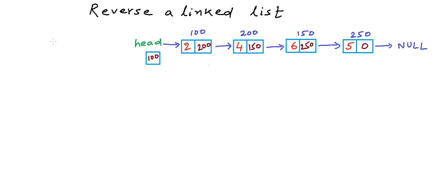Let's say we have been given a linked list of integers. This is our input. We have four nodes in this linked list at addresses 100, 200, 150, and 250 respectively. I always write these addresses in the logical view because it's really important that we visualize how things are in memory. This first node, which we also call the head node, is being pointed to by a variable named head, which is storing the address of the head node. This variable is only a pointer, not the head node itself, and we do not have any other identity of the linked list except the address of the head node.